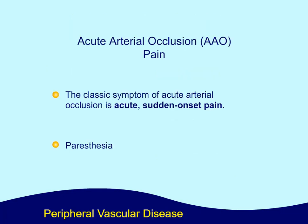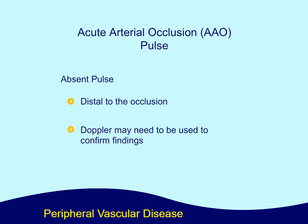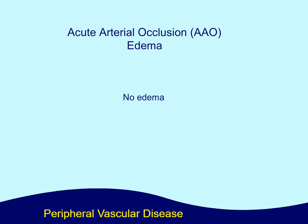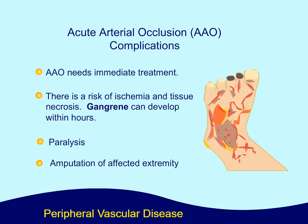Pain. The classic symptom of acute arterial occlusion is acute and sudden-onset pain, as well as paresthesia. Pulse. There is an absent pulse distal to the occlusion, and a Doppler may need to be used to confirm the findings. Skin changes include skin that has a pale pallor or is cyanotic and dusky, or the extremity feels cold. Edema. There is no edema with AAO. Complications include immediate treatment required, risk of ischemia and tissue necrosis, and gangrene can develop within hours. Other complications include paralysis and amputation of the affected extremity.